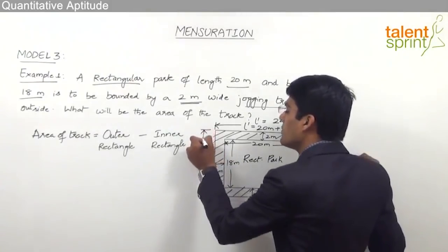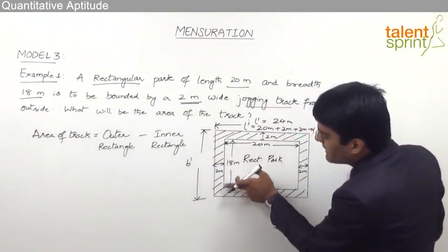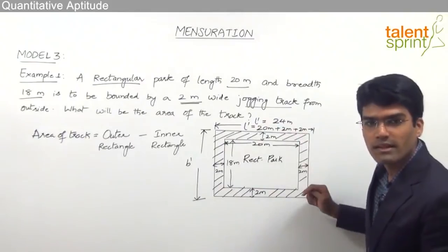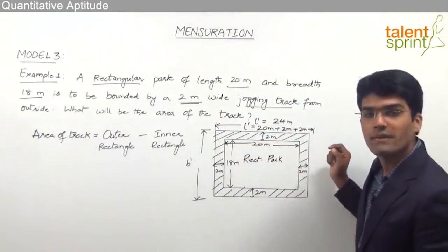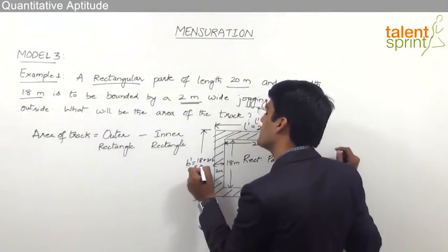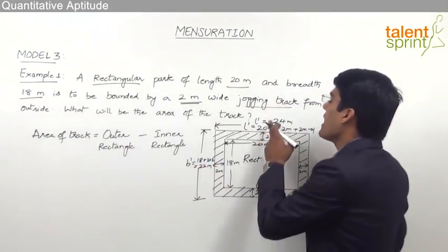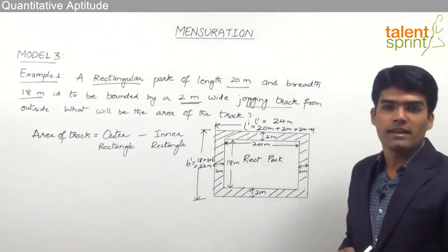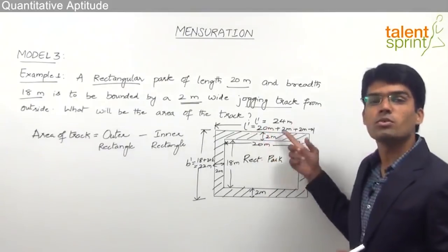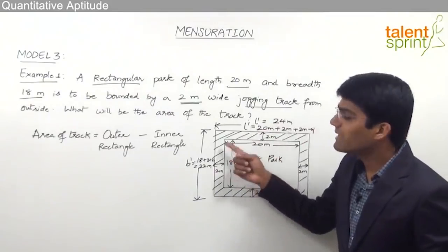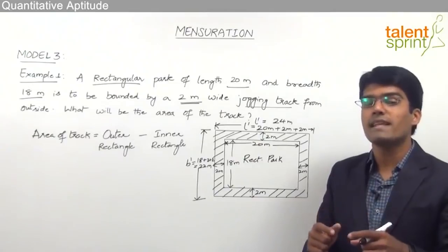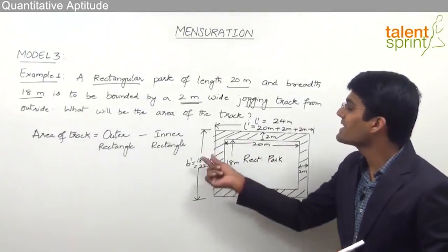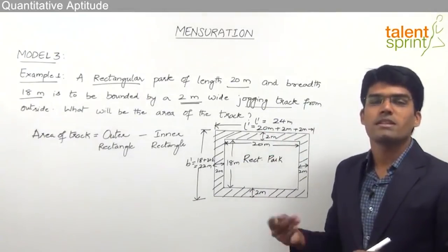Similarly, the breadth B' of the outer rectangle will be the inner breadth of 18 meters plus 2 meters on top and 2 meters on the bottom due to the jogging track, giving 18 + 2 + 2 = 22 meters. Many students go wrong here by taking only 20 + 2 and 18 + 2. Remember, the 2-meter extension is on both sides, so it should be 20 + 4 and 18 + 4.